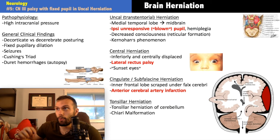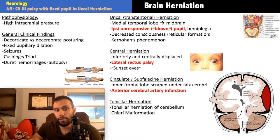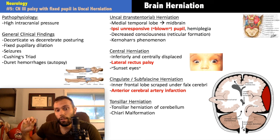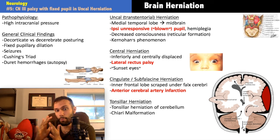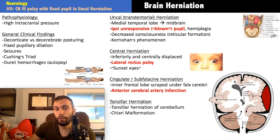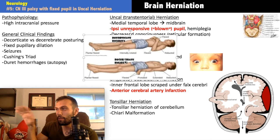Now let's discuss brain herniation. High intracranial pressures can force cerebral tissue through different skull openings, particularly the foramen magnum. Causes include brain tumors, traumatic brain injury, hemorrhage, and edema — all can shift brain tissue due to elevated ICP. Increased ICP can push an artery, compressing it enough to cause infarction. Key clinical findings include decorticate and decerebrate posturing, which are also part of the Glasgow Coma Scale.